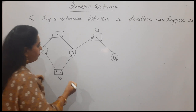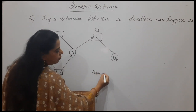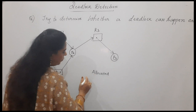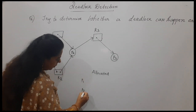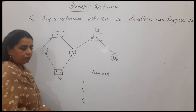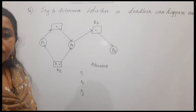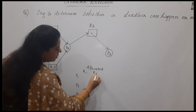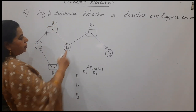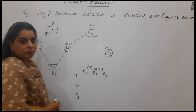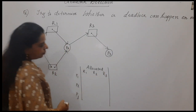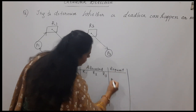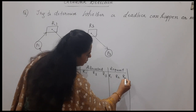We can do it in this manner. I will write here: 'Allocated' — assigned also means the same — allocated for the processes P1, P2, and P3. These are the three resources in the system: R1, R2, and R3. Then we make a table, and also write down for which resource each process is making a request.